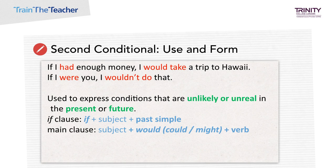The second conditional is used to refer to conditionals that are unlikely or unreal in the present or future and are not based on fact. It refers to a hypothetical condition and its probable result. The if clause is in the past simple and the main clause uses 'would' plus the main verb. Similar to the first conditional which uses the present simple in the if clause but talks about a future time, the second conditional uses the past simple but also refers to a future time — only that it is about an outcome that is less likely.